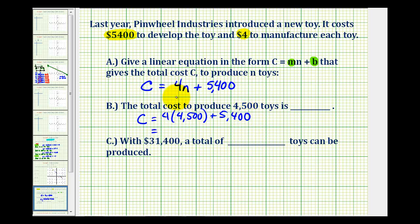Well, 4 times 4,500 is 18,000 plus 5,400, so we have 23,400, and this would be in dollars to represent the total cost to produce 4,500 toys.